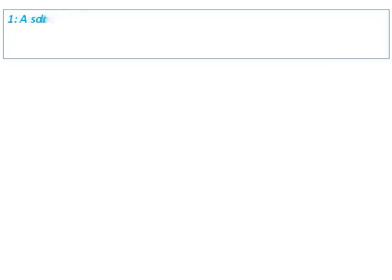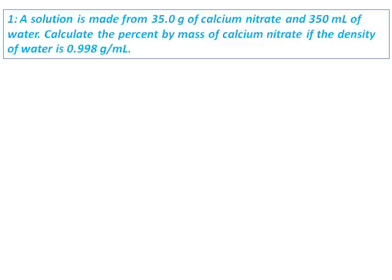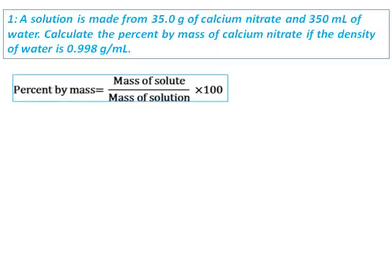A solution is made from 35 grams of calcium nitrate and 350 milliliters of water. Calculate the percent by mass of calcium nitrate if the density of water is 0.998 grams per milliliter. Since we have asked to calculate the percent by mass, let's define percent by mass.